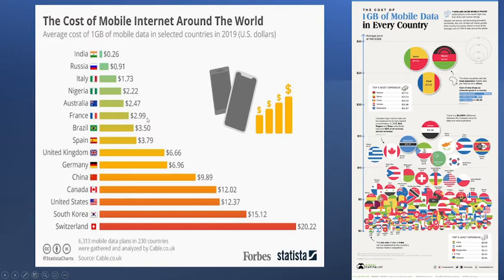Now I want to show you the fragility of data. On the right side you see this is also the average cost of 1 GB — only difference is this covers almost every country in the world. The top three countries shown here are African countries which were not shown on the left side, but that's not the bigger problem.